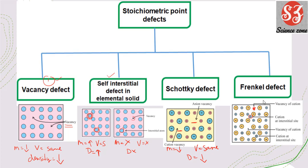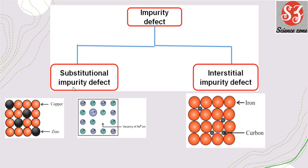Next is impurity defect, which is of two types: substitutional impurity defect and interstitial impurity defect. In substitutional impurity defect, a foreign particle substitutes a host particle — for example, in brass, some zinc particles substitute copper atoms. In the other type, a host particle goes missing creating a vacancy, and a different particle occupies that site to balance the charge of the missing ion — as when Sr²⁺ substitutes Na⁺.